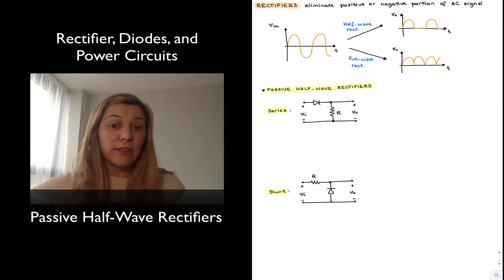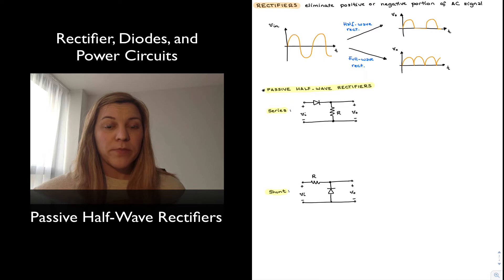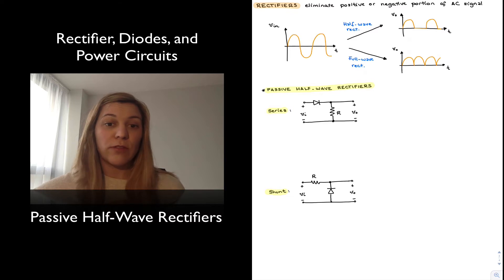There are two modalities of rectifiers. There are the half-wave rectifiers, which simply let through part of the signal — either the positive or the negative — and suppress the other one. And the full-wave rectifiers, which allow through the positive or negative part of the input signal and then invert the other part, so that the resultant output signal will be all positive or all negative.